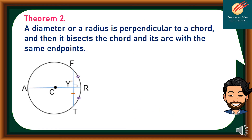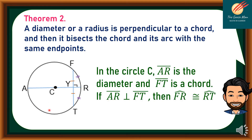Let's move on to theorem number 2. A diameter or radius that is perpendicular to a chord bisects the chord and its arc. Let's consider circle C, where line segment AR is the diameter and FT is a chord. If AR is perpendicular to FT, then RF is congruent to RT.